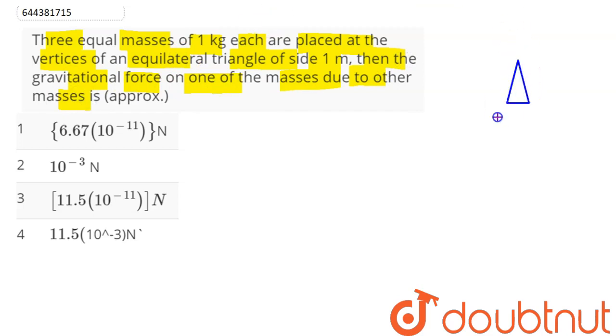So here we can say suppose these are three masses placed at three corners of an equilateral triangle. Each mass magnitude is given as 1 kg, so we can find the force due to other masses on one mass, that is at the topmost mass here.